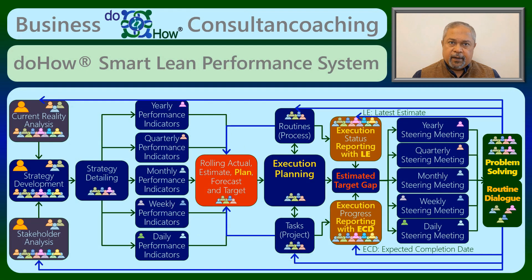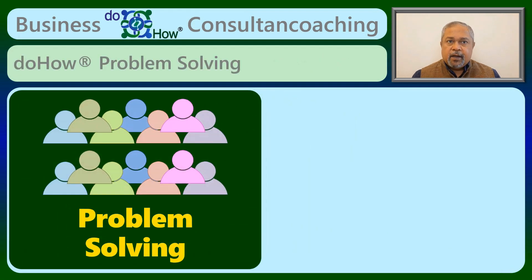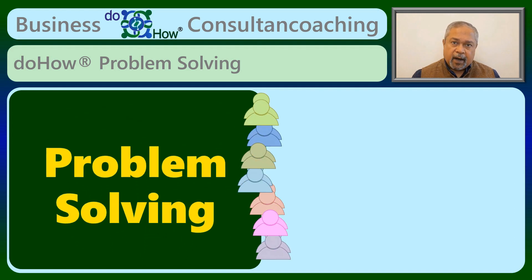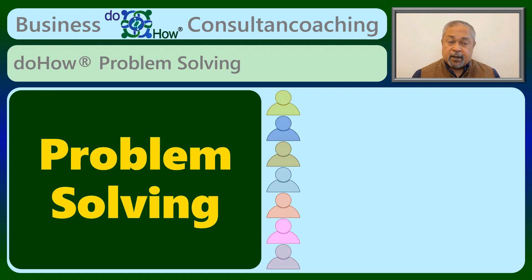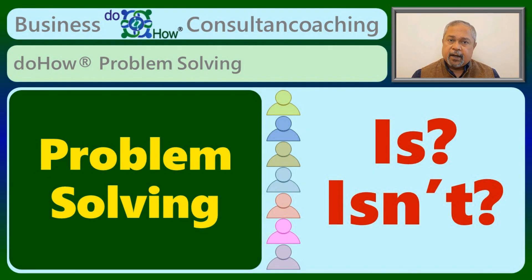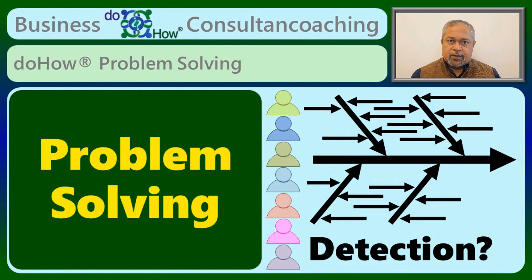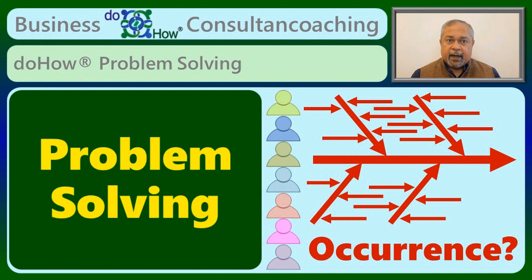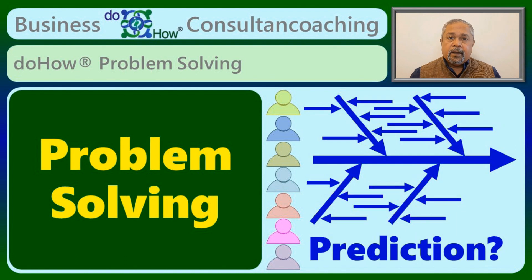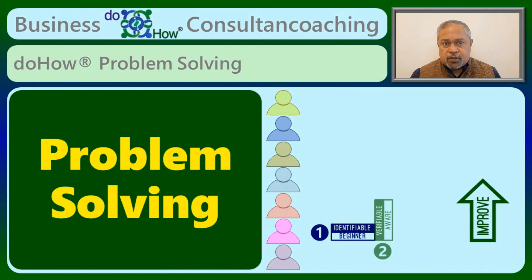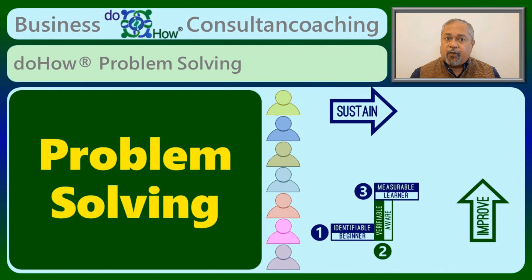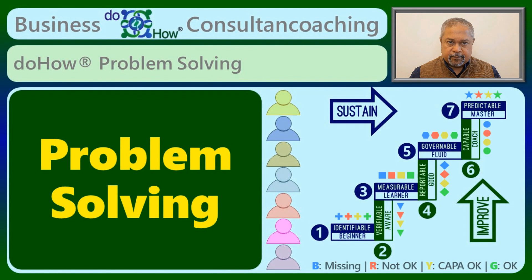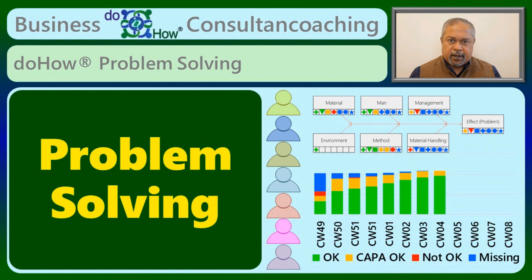Problem solving can be done by everyone using guided templates by first narrowing down the problem with ease — ease not analysis — followed by preparing cause and effect diagrams for detection, occurrence and prediction. The flow maturity model is then used to increase the maturity of all the causes identified for making them predictable. The development of the maturity is further tracked for killing the problem.